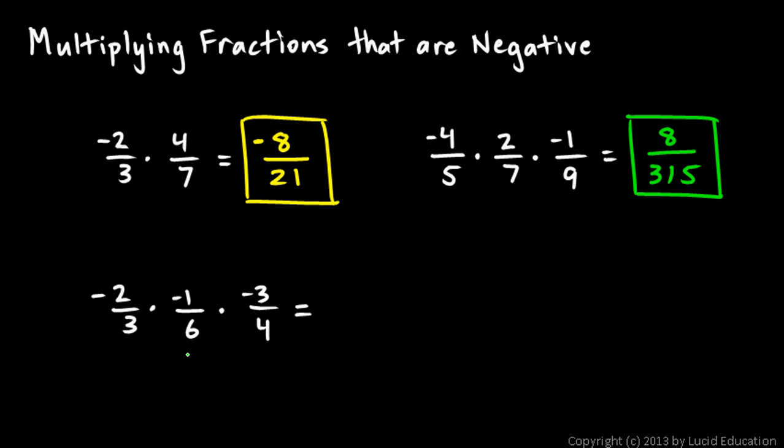Negative 2 thirds times negative 1 sixths times negative 3 fourths. Okay, I know there are three negative signs multiplied together, so the answer will be negative. Let's simplify a little bit. This 3 and this 3, those will reduce to ones.